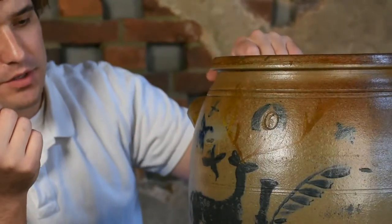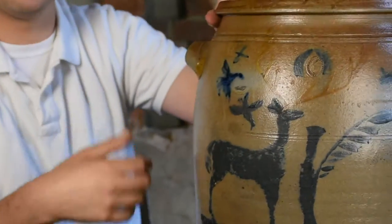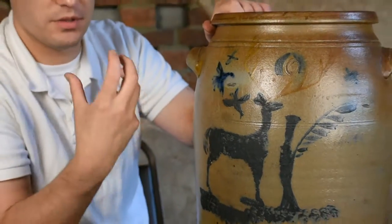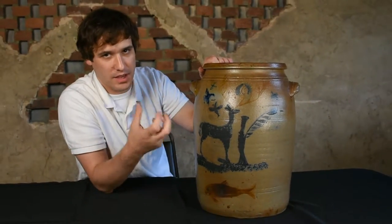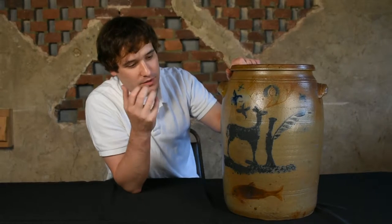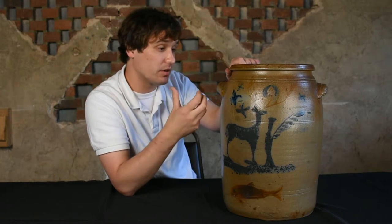So as far as figural decorated stoneware from West Virginia is concerned, you really couldn't hope for much more. I mean, this is really a trifecta of Morgantown designs. And we have land, sea, and air represented on the same piece. So it's a very exciting offering, completely fresh to the market, actually just recently discovered. And we're very excited to offer it in our July 16th auction.